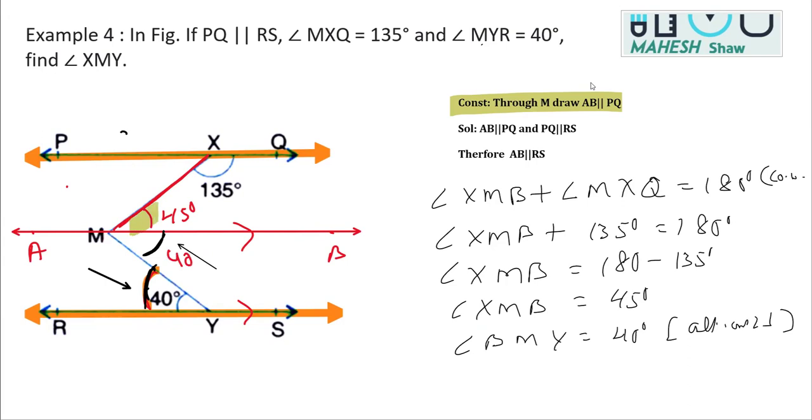So clearly, the sum of these two angles will be 85 degrees. That's very clear from the figure. We can say, therefore, angle XMY, which is the sum of these two angles, which is 45 plus 40, that is equal to 85 degrees.